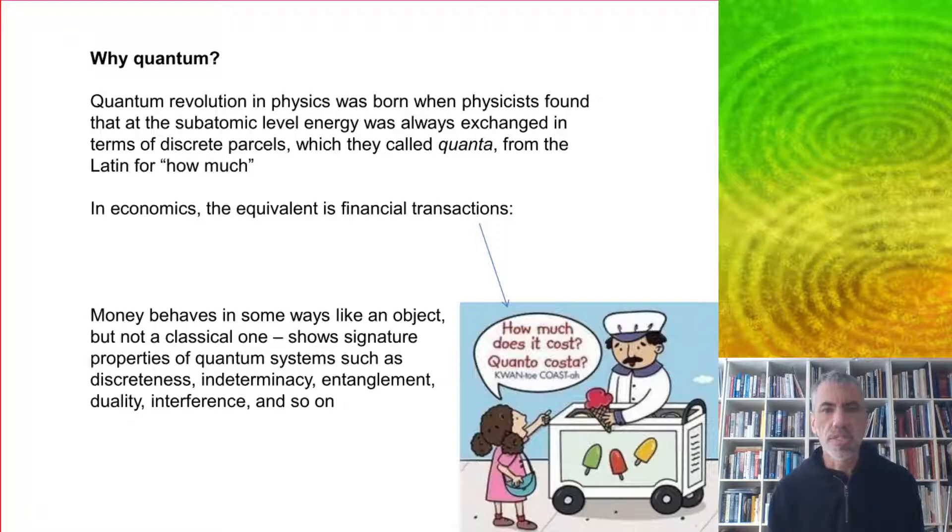So money behaves in some ways like an object, but not a classical one. It shows signature properties of quantum systems such as discreetness, indeterminacy, entanglement, duality, interference, and so on.